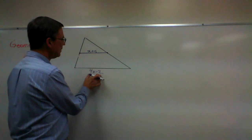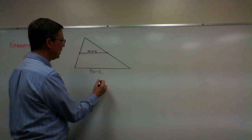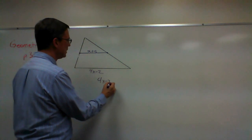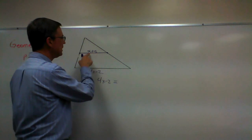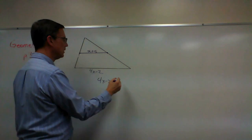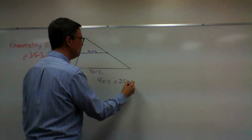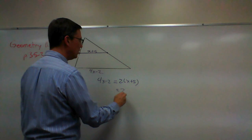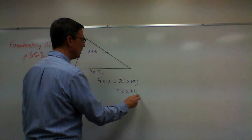So let's think about it. This longer one, four X minus two, has to be equal to twice the length of that. Two times X plus five, which would be two X plus 10.